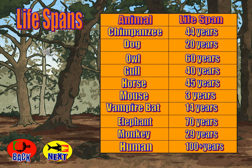Have a look at the average life spans of these animals. Remember, not every single chimpanzee will live for 44 years, but the average is the most common. Do any of these surprise you? Pause the video while you have a look and see what you think.